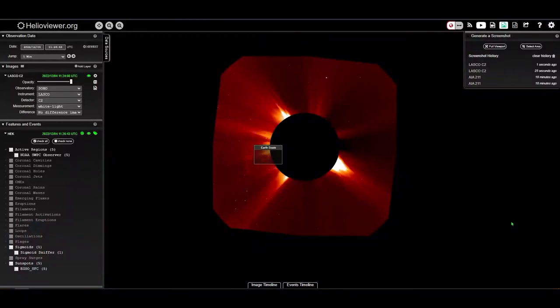All right, so here we are on the website, helioviewer.org, a much higher quality website which gives you a much higher quality image or images than many other sites you see online. So over here on the upper left is where you would set the camera. Right now we're on Soho. We have the instrument set for Lasco, as in Lasco C2, which is where I originally found this object. And then the detector, as you can see once again, is C2.